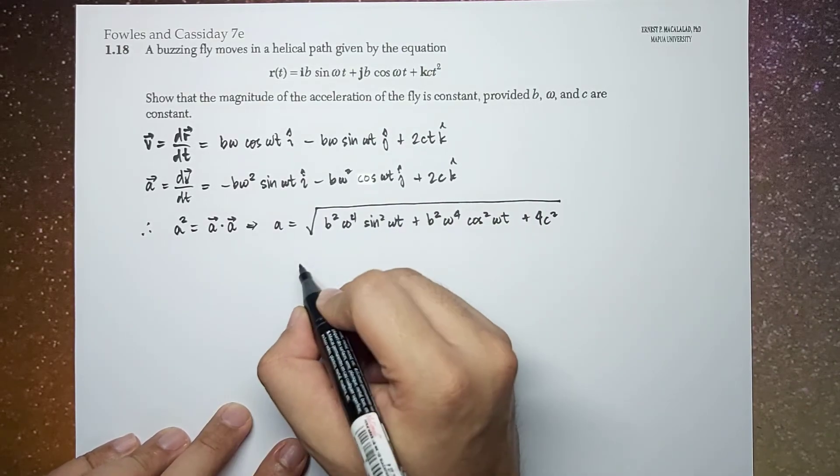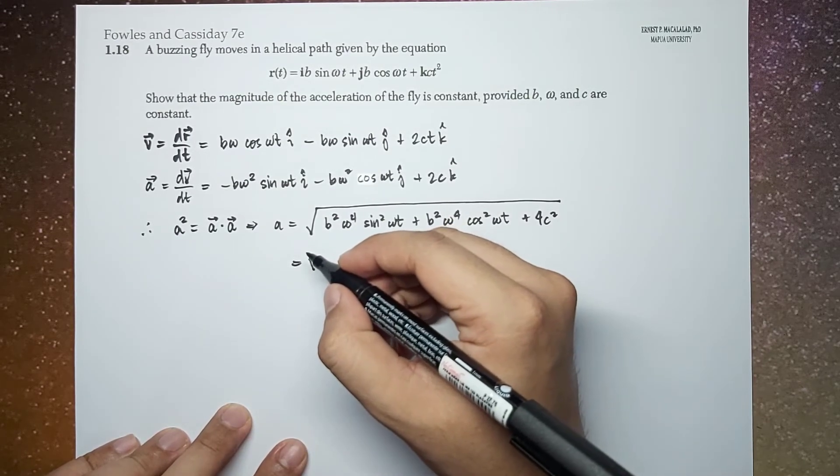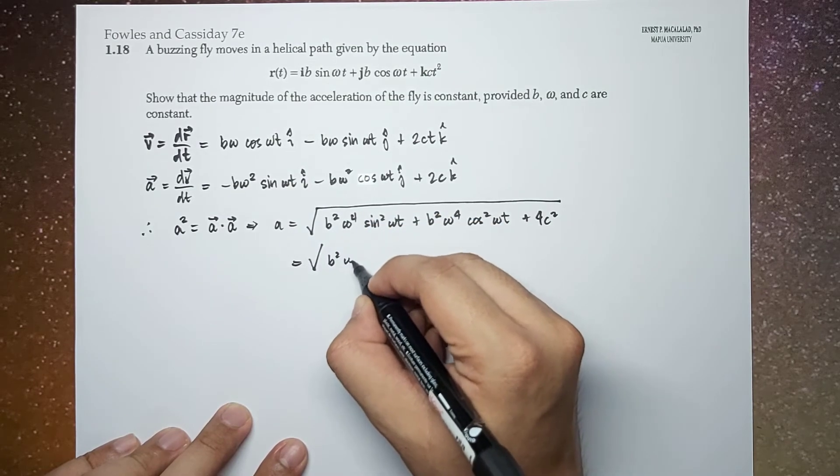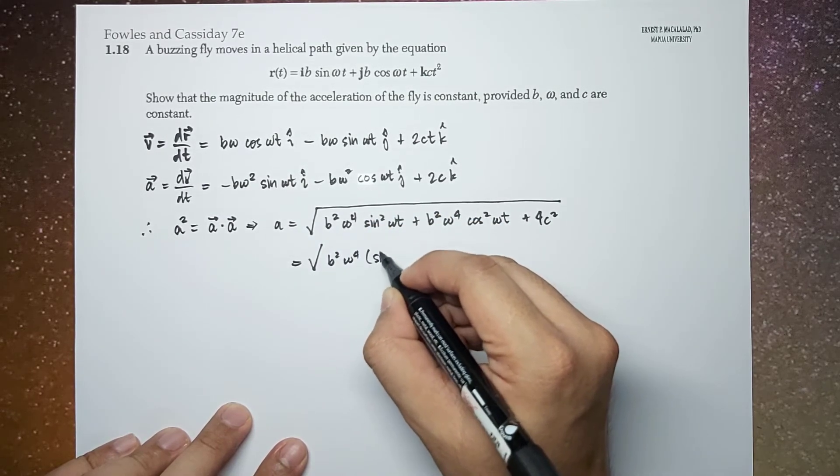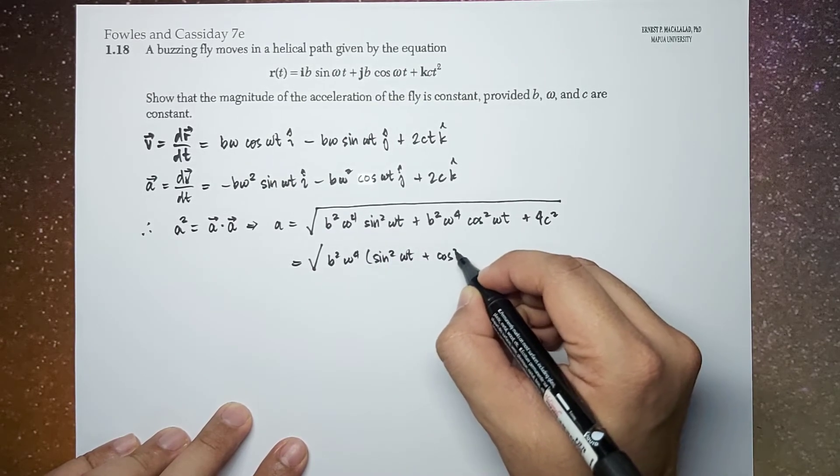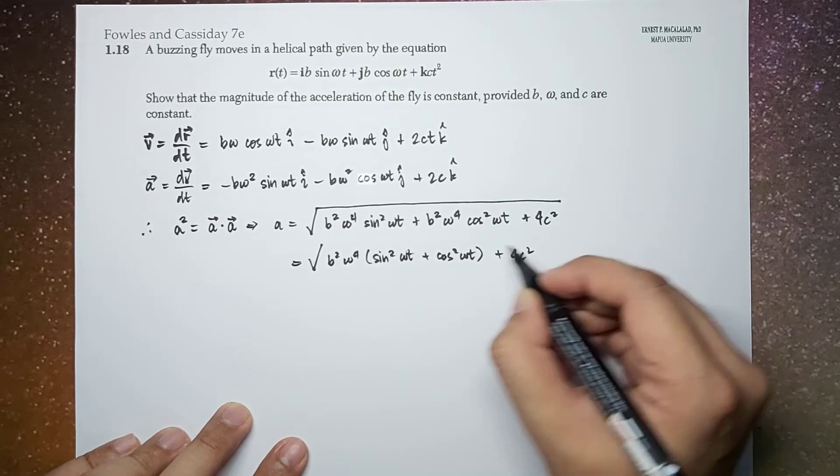Okay, then you can just simplify this. So this is square root of b squared omega to the 4th times sine squared omega t plus cosine squared omega t plus 4 c squared.